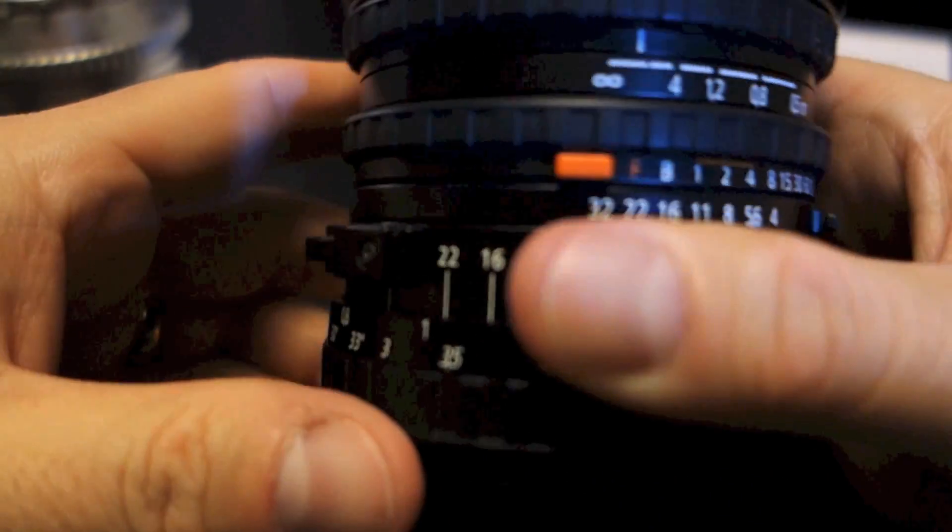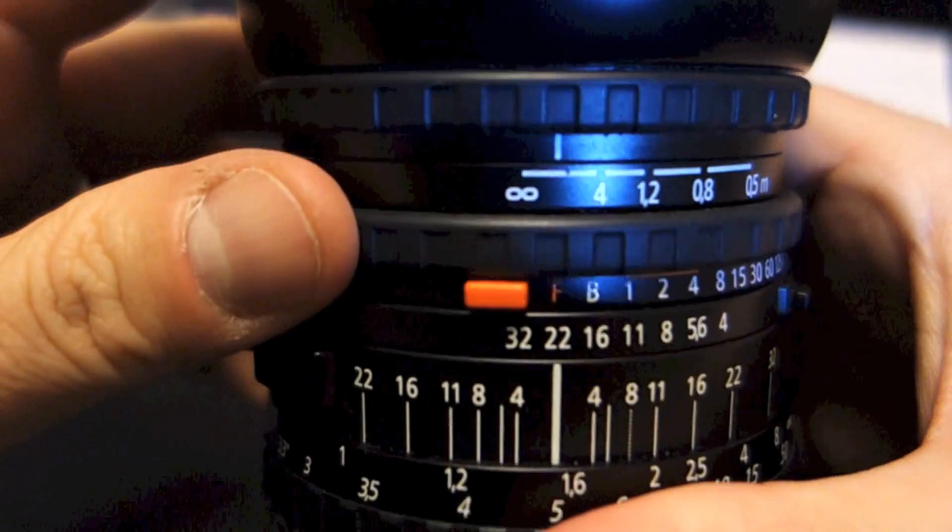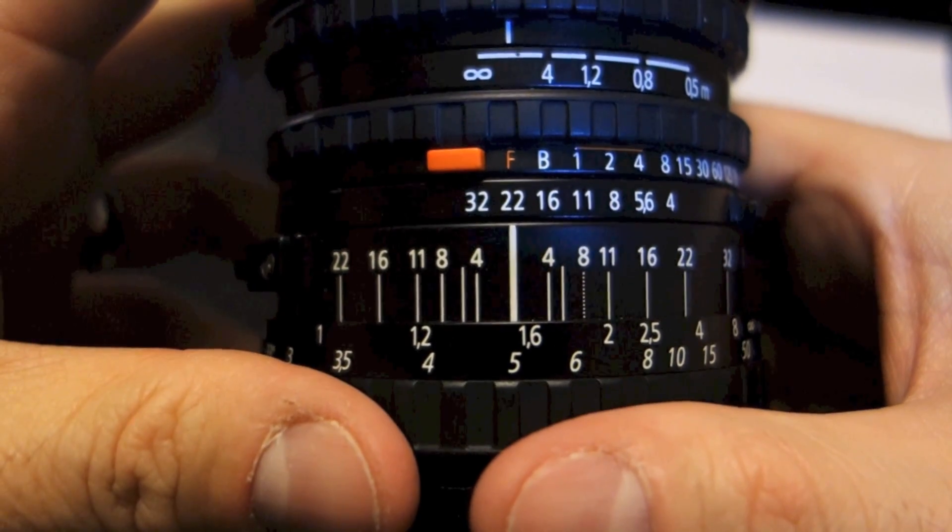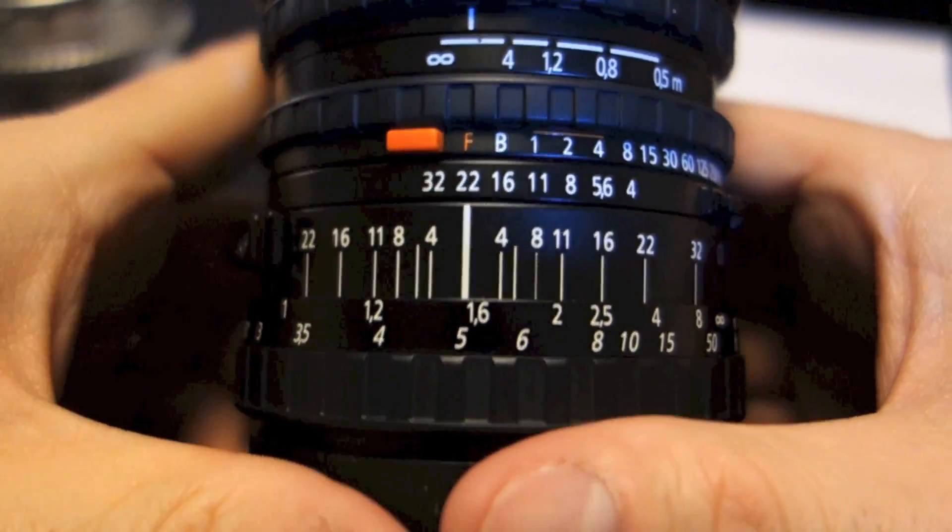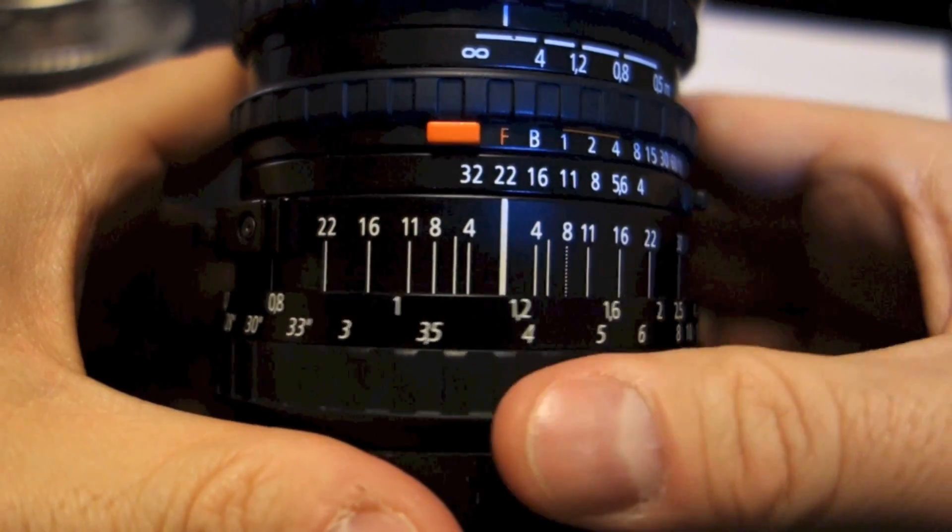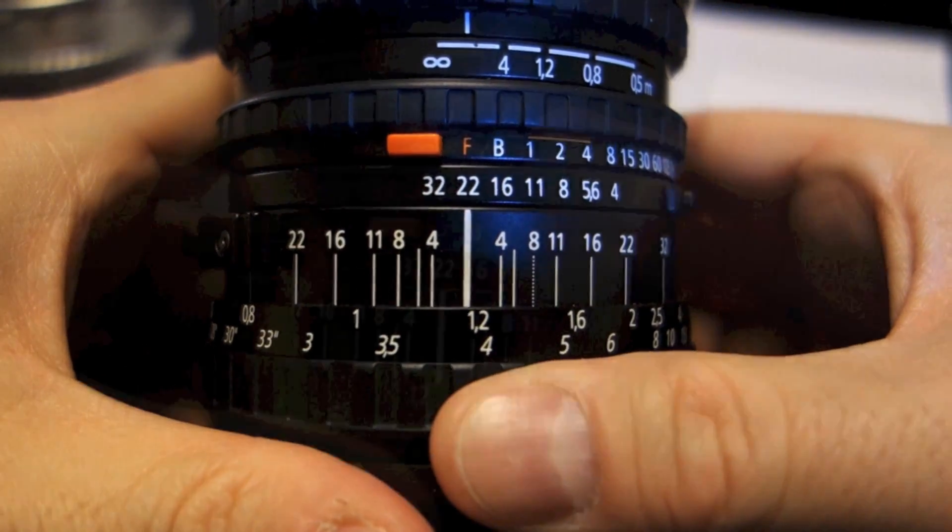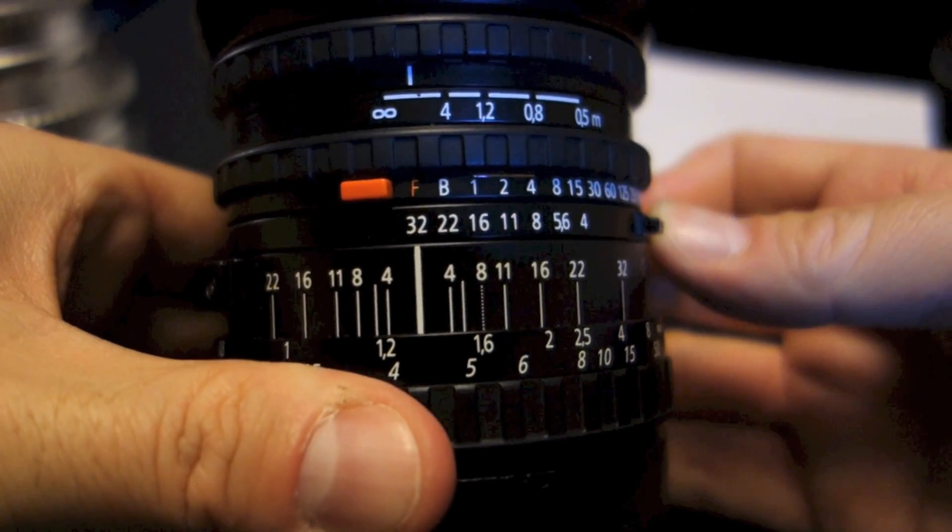So let's demonstrate this same principle on another lens. This is a fifty millimeter Hasselblad. So this has a wide field of view. This is a short focal length lens. Let me set it to four feet. So let's set it on thirty-two, F32, at four feet.